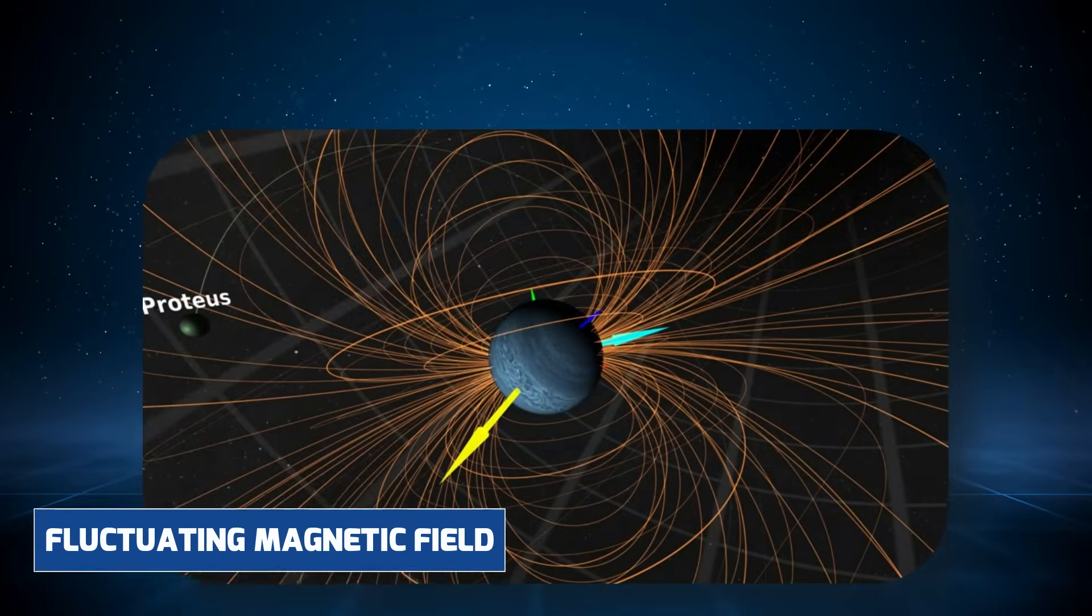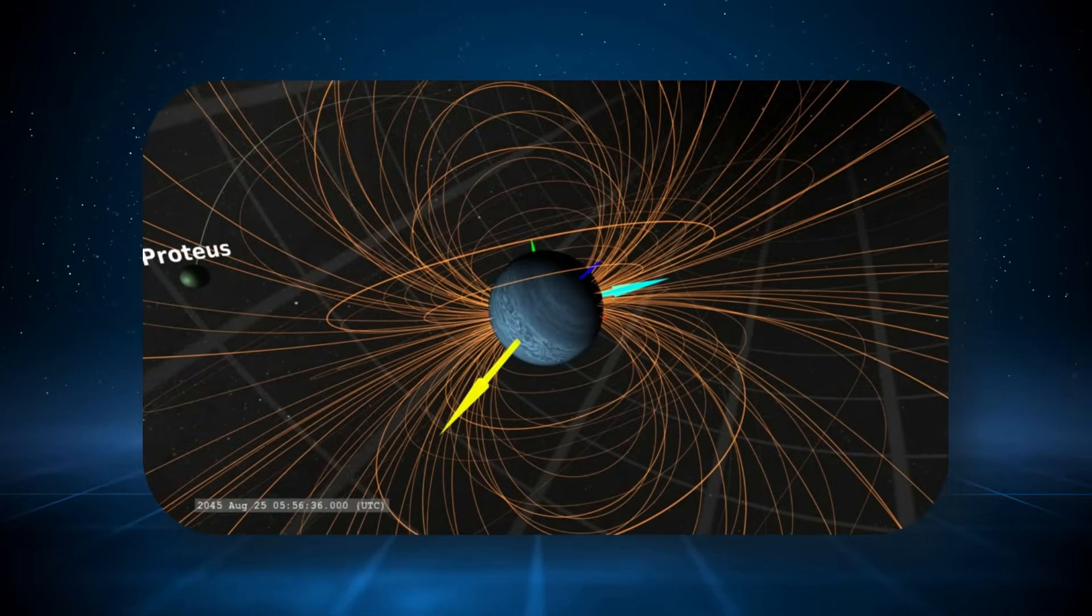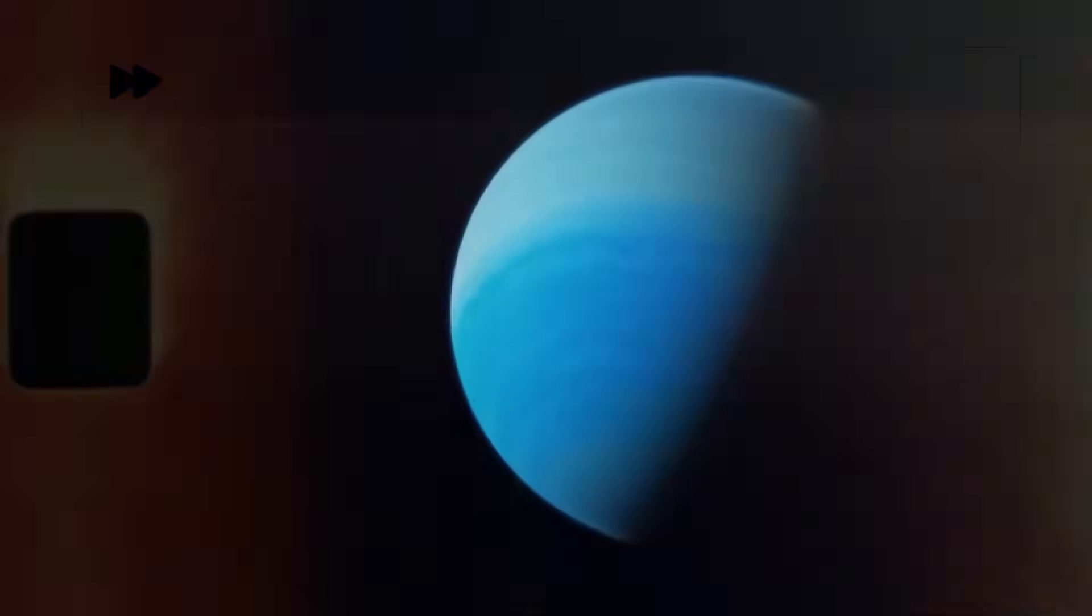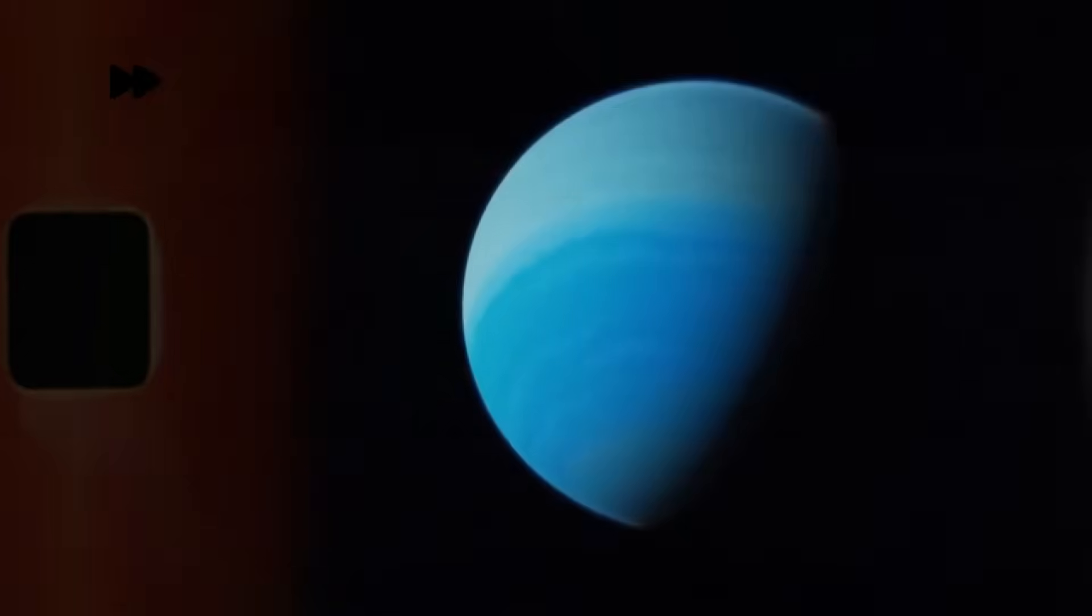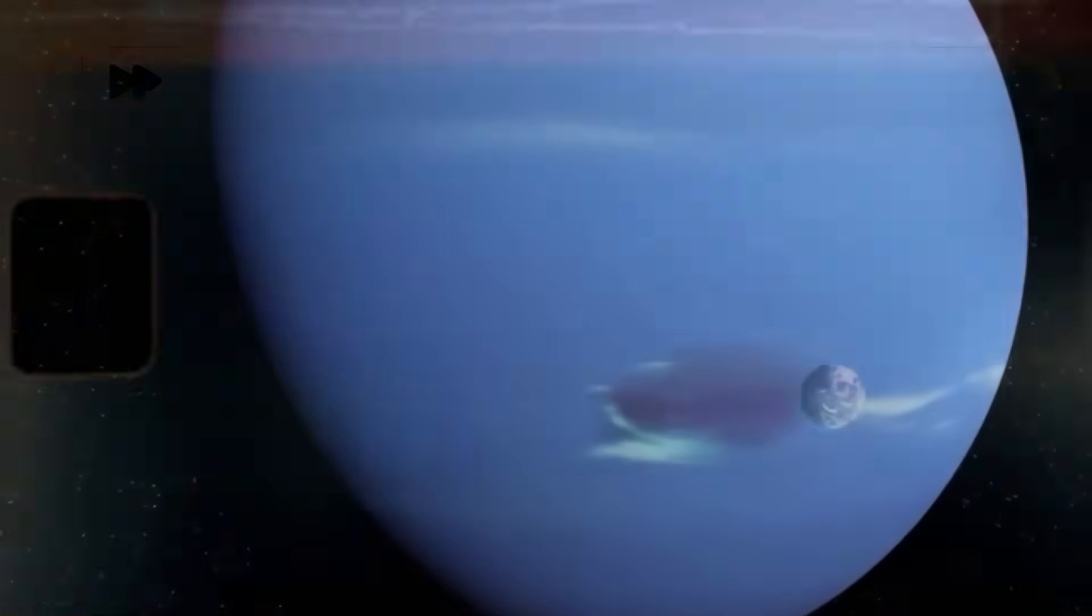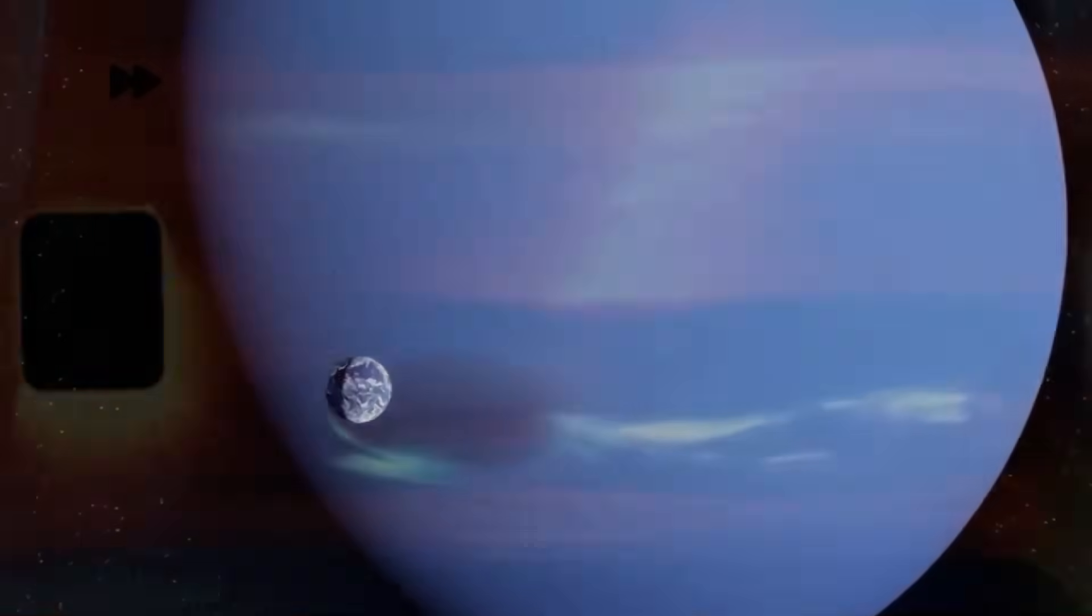Tyson suggested that Neptune's fluctuating magnetic field and varying radiation outputs might influence Triton more directly than imagined, possibly inducing surface changes or even subsurface liquid activity. This interplanetary influence hints at a deeper, more intimate relationship between a planet and its moons, a gravitational and electromagnetic partnership that extends far beyond tidal locking or orbital resonances.